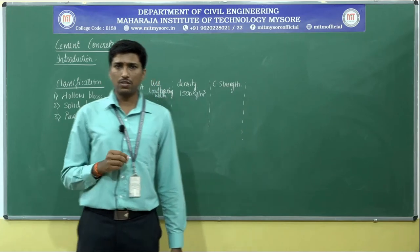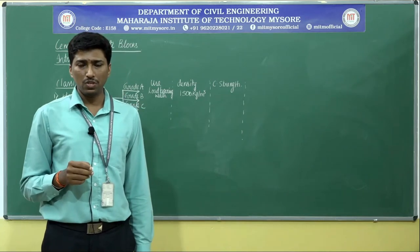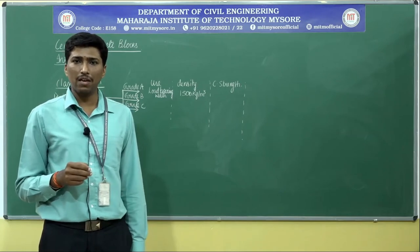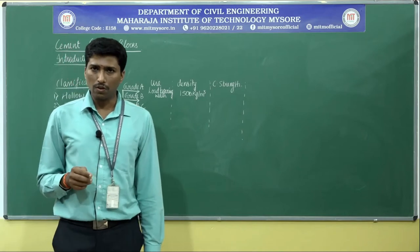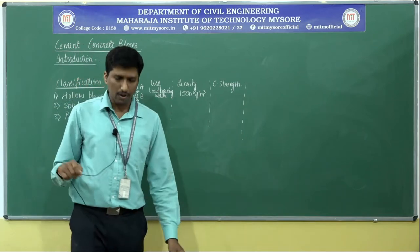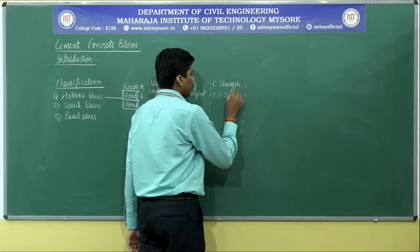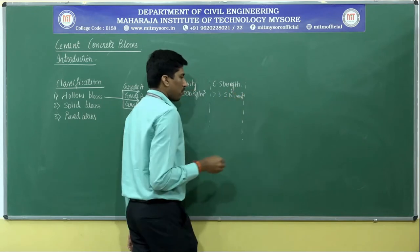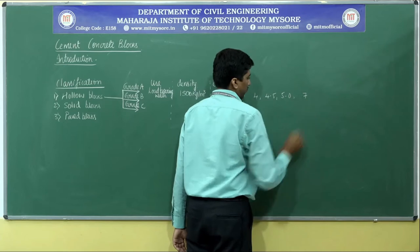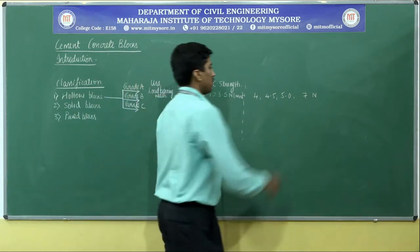For Grade A hollow blocks, the compressive strength — tested after curing — must be greater than 3.5 Newton per mm². It can vary from 3.5, 4, 4.5, 5.0, up to 7 Newton per mm². This is the compressive strength range for Grade A hollow blocks used in load bearing wall applications.